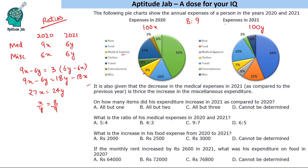Since total expense increases from 8 to 9 parts, we check each category. Rent: 43% vs 44% of a larger number — increase. Food: 16×8=128 vs 15×9=135 — increase. Medical: already known to have decreased. Miscellaneous: 6% vs 7% of a larger number — increase. Clothing: 17% vs 19% of a larger number — increase. Savings: 3% vs 6% — increase. So expenditure increased in all items except medical. The answer is all but 1.